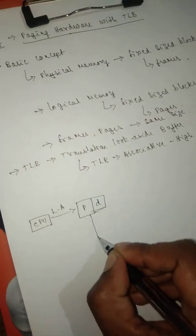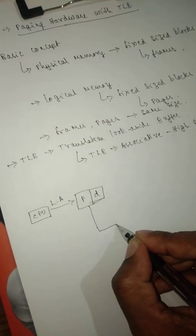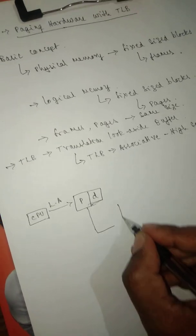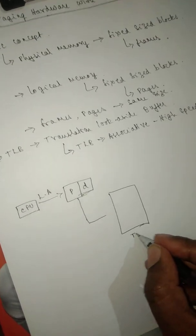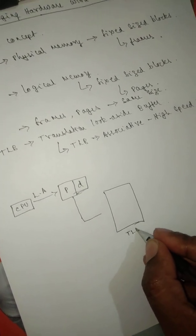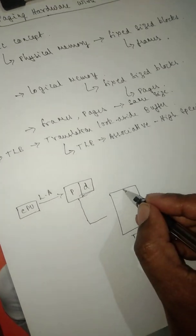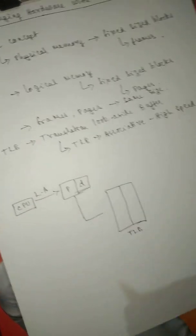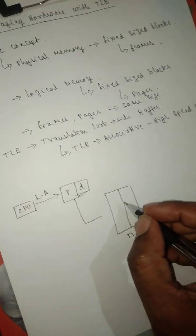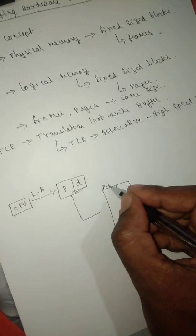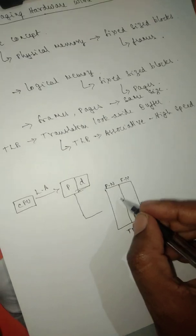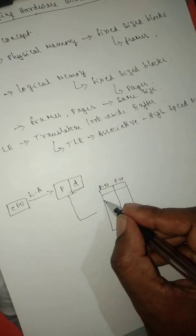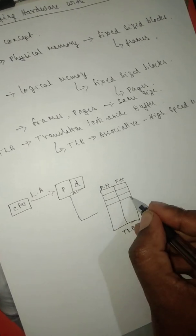First, you take this page number and search in what we call the TLB buffer. Here you'll have two things: one is the page number and the next is the frame number. You'll have n number of fixed-size blocks.